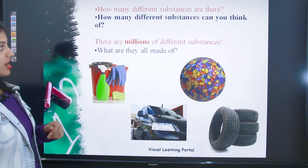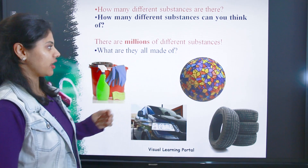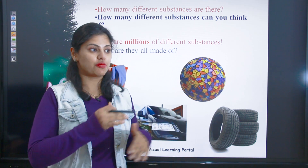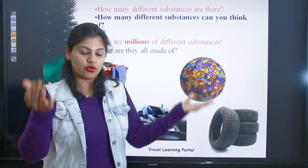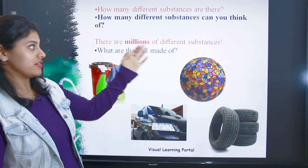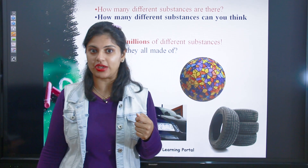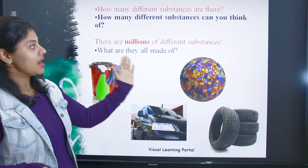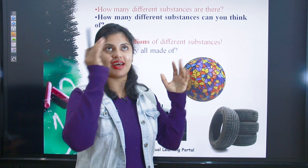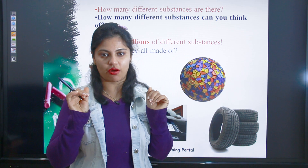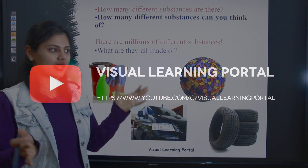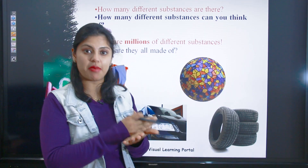First of all, a question: if you think about how many different substances are there around you — jo bhi aaspaas hai, jo bhi aap use karte ho ya jo bhi aap normally life mein dekhte ho — how many different substances can you think of? There are millions of different substances, for example chair, table, floor, walls, light — so many things.